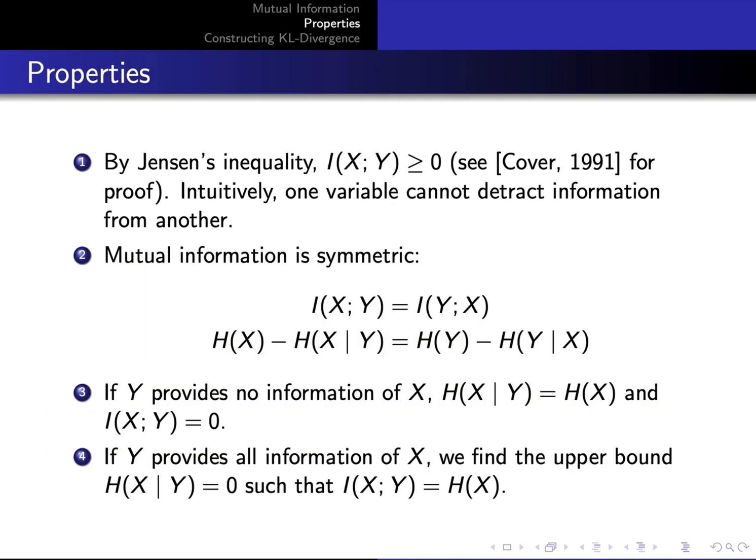Note that mutual information is non-negative, so we cannot detract information from a random variable. It is also symmetric. We have the lower bound zero when the conditional is equivalent to the marginal entropy and the upper bound of the marginal.